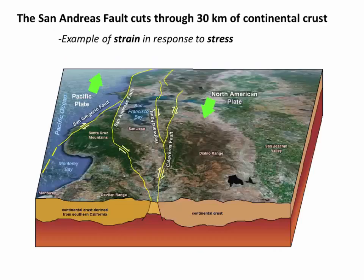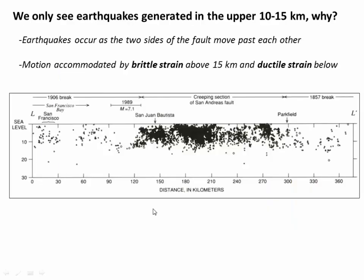I want to motivate this with a quick example. The San Andreas Fault, roughly going from San Francisco down to the Mexico border — the Pacific Plate is moving north and the North American Plate is moving south along this strike-slip fault. This fault penetrates to roughly 30 kilometers depth. However, if we look at the pattern of earthquakes along this fault, earthquakes only go to roughly 15 kilometers depth, as seen on this cross-section profile going from San Francisco down towards Parkfield, California. So why are we only seeing earthquakes in the upper 15 kilometers depth?